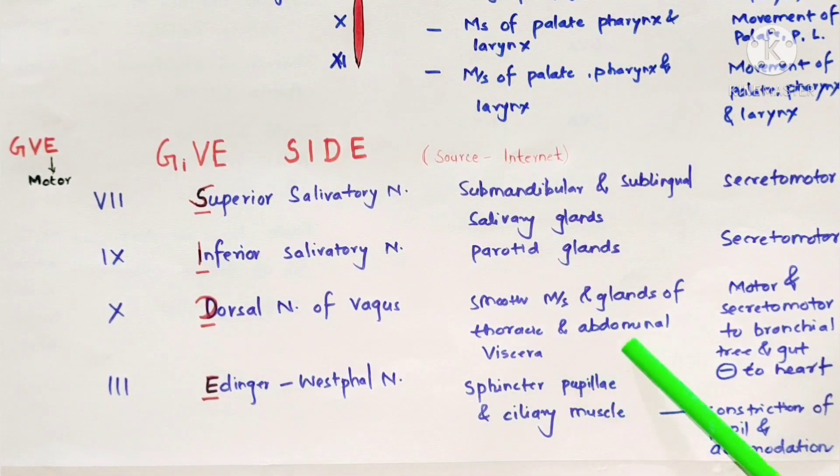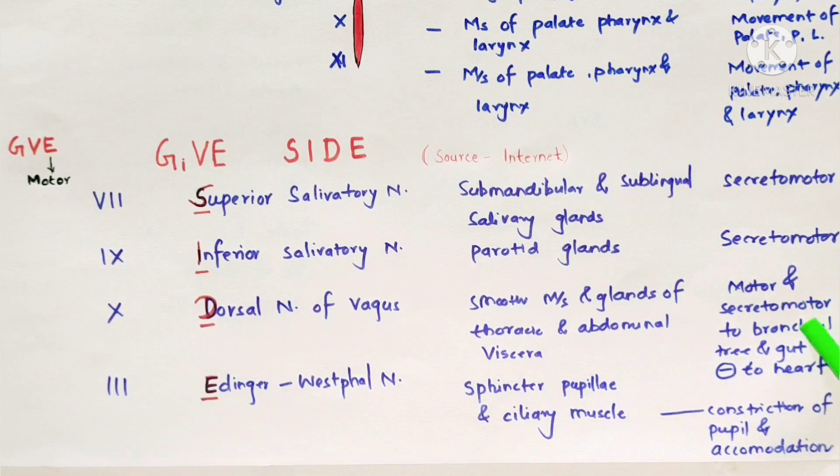Inferior salivatory nucleus of glossopharyngeal nerve supplies parotid gland with secretomotor function.